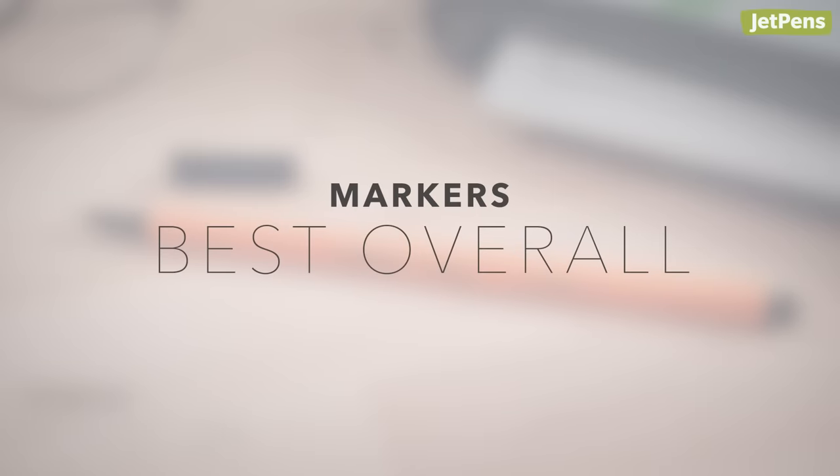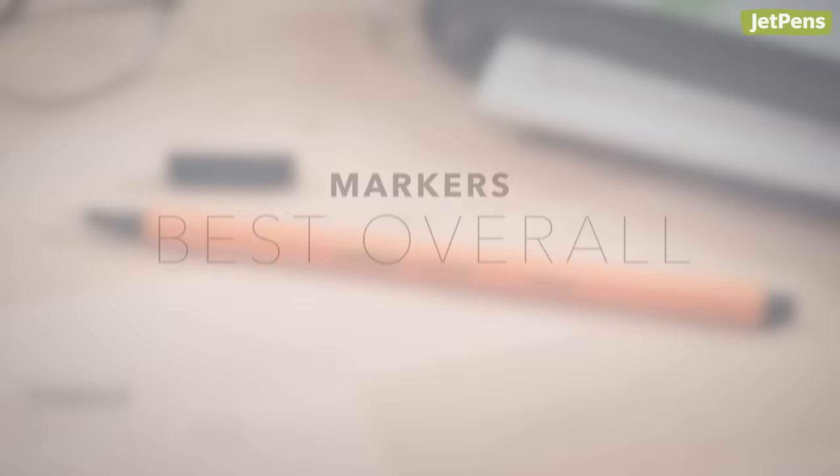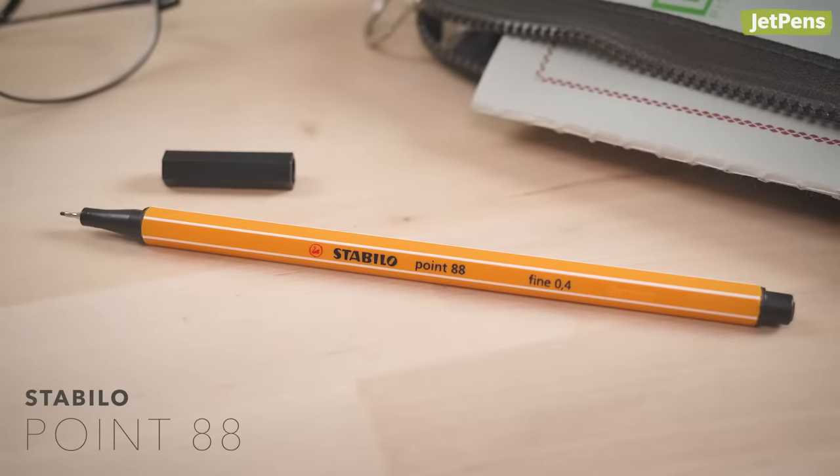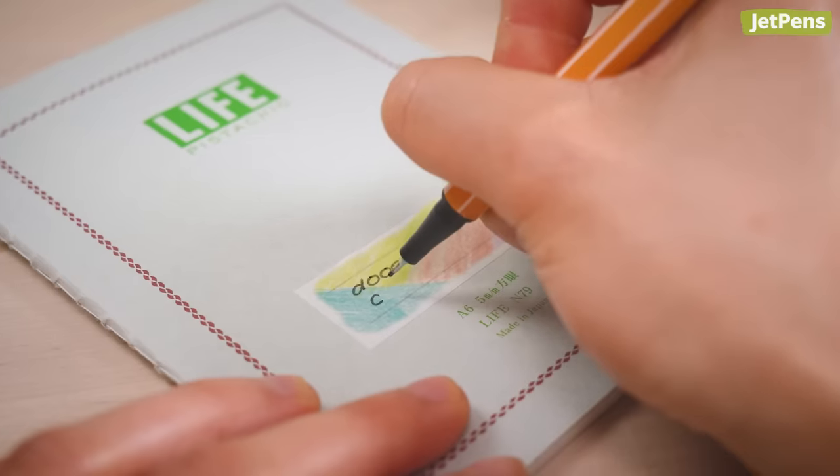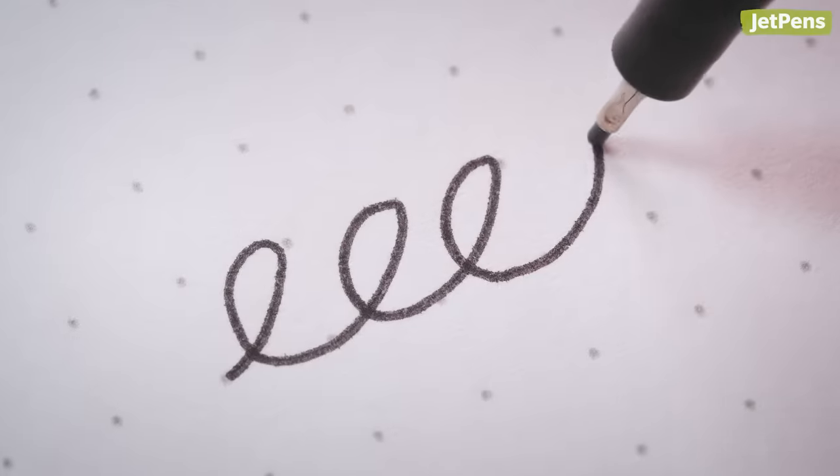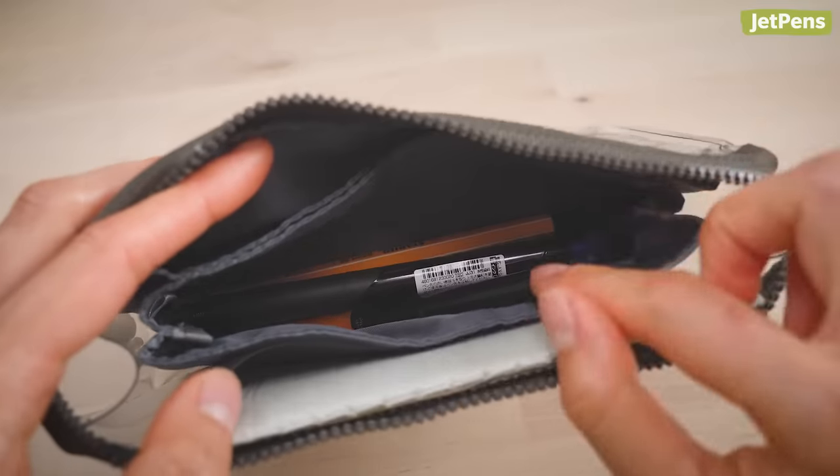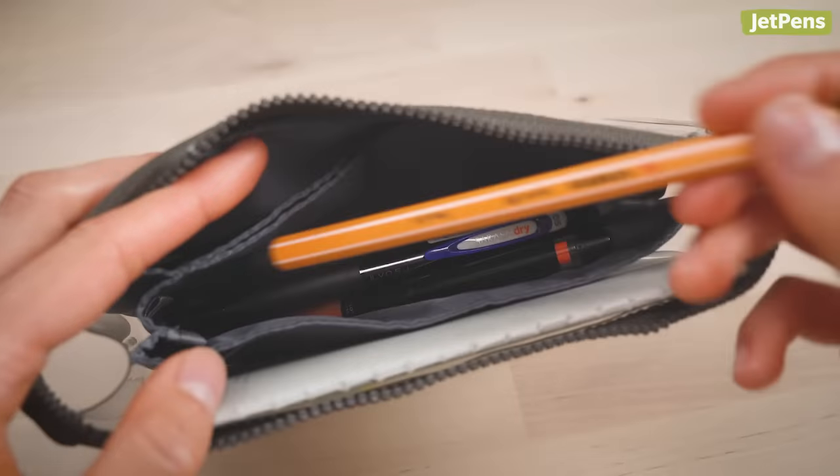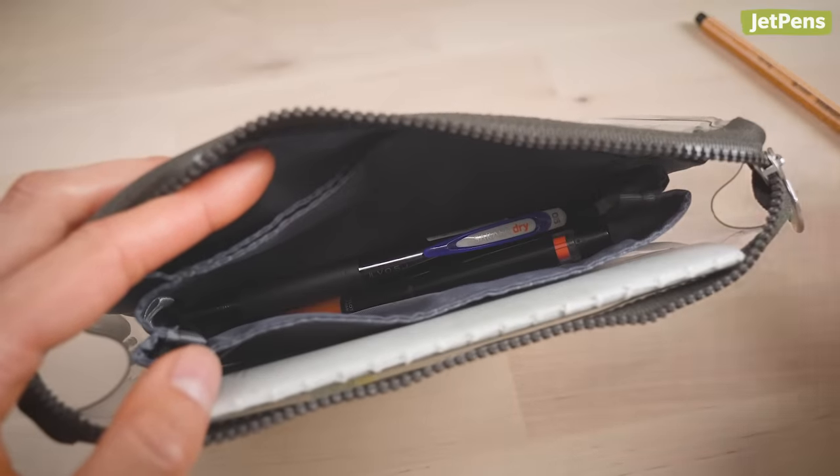Markers Best overall. Whether you're writing or sketching, the Stabilo Point 88 should be the fineliner you reach for. Its tip is shielded with a metal casing that keeps it from fraying. Its bright orange barrel makes a strong statement, and it's easy to spot in even the most cramped pen cases.